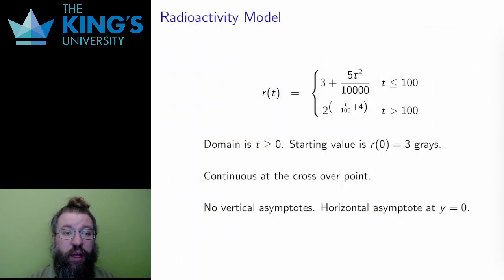Here's a function that models the radioactivity at a site. Capital T is measured in years and R is measured in grays—sorry, lowercase t is measured in years and R is measured in grays, the unit of radioactivity.